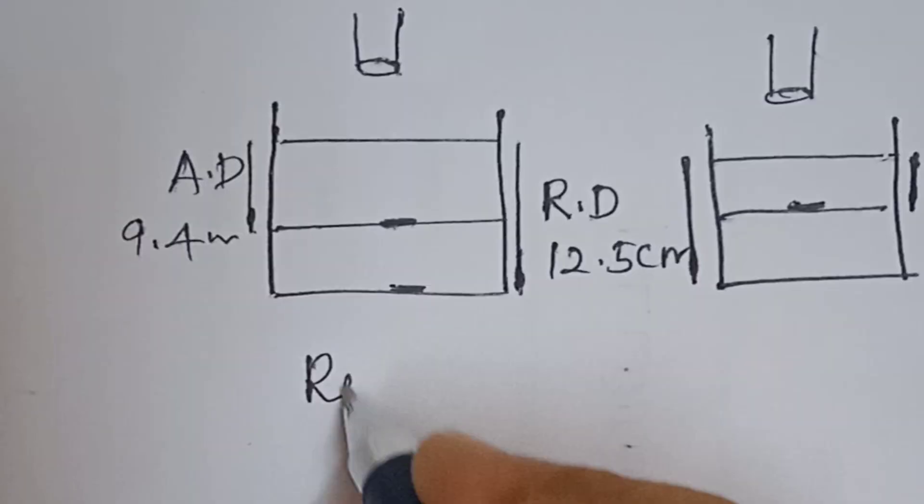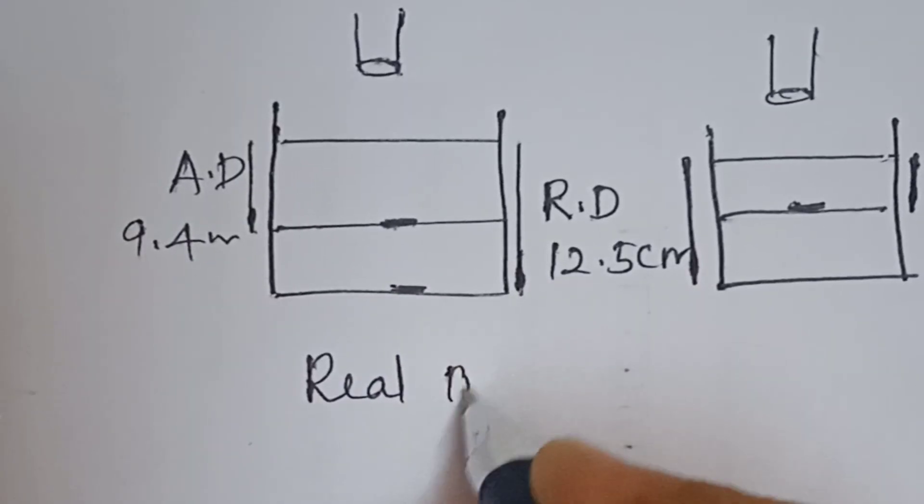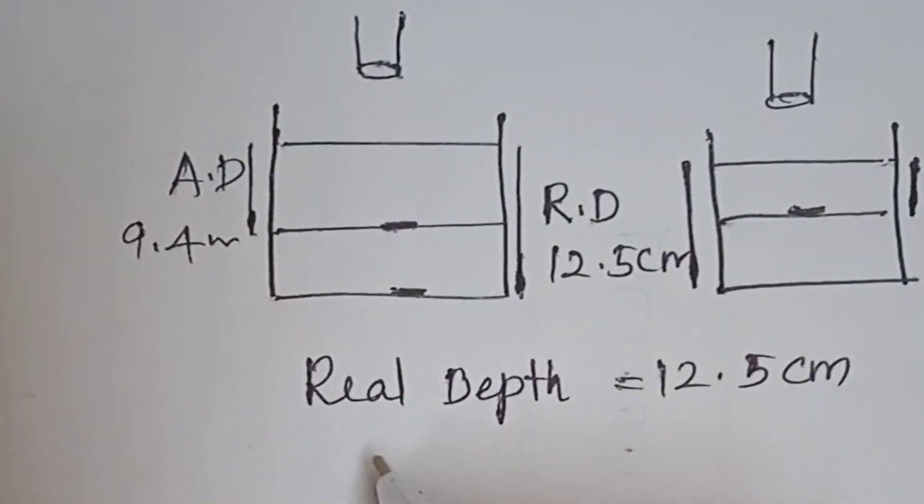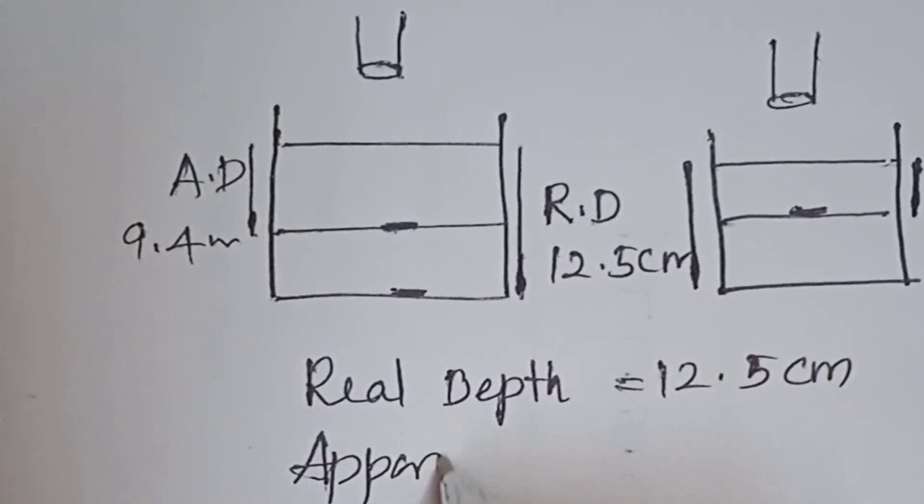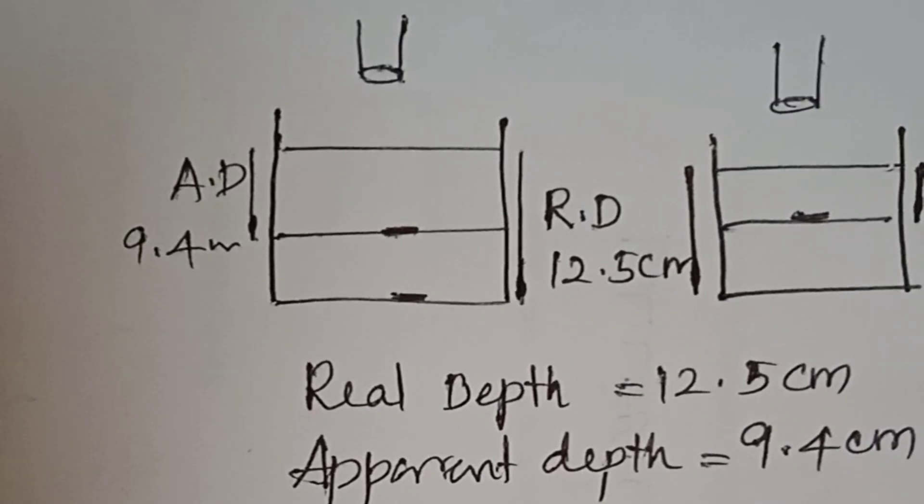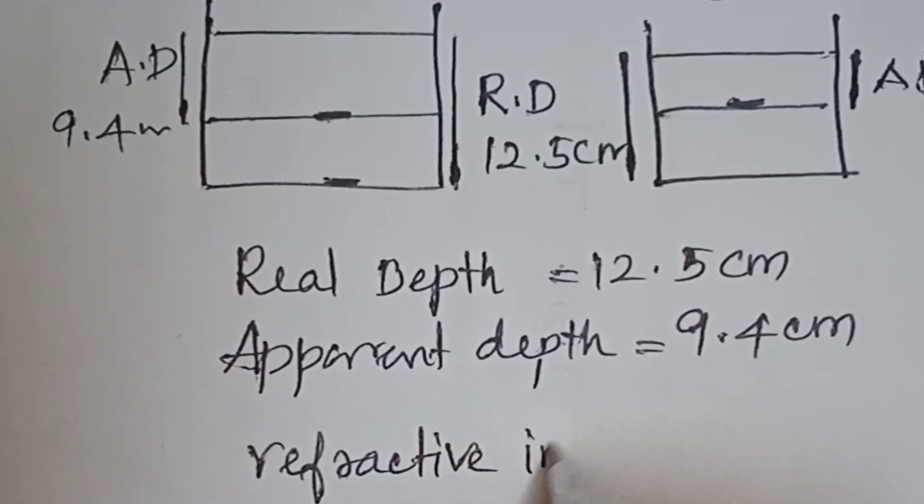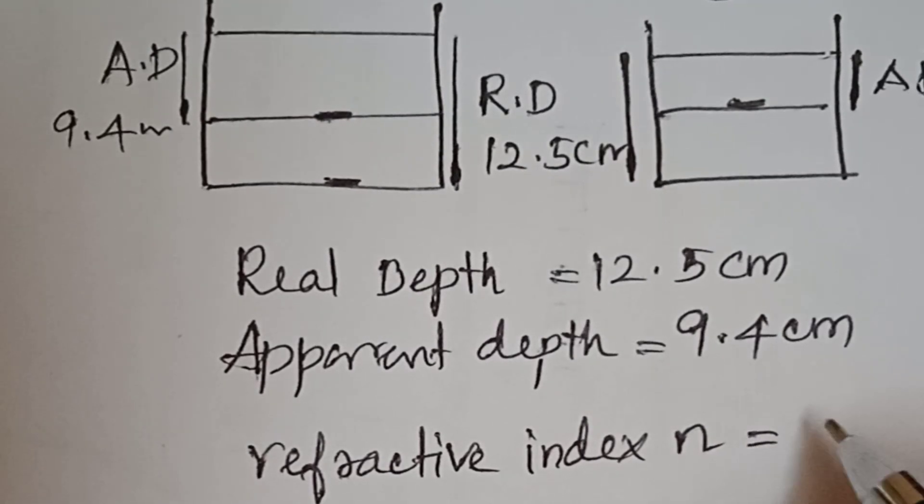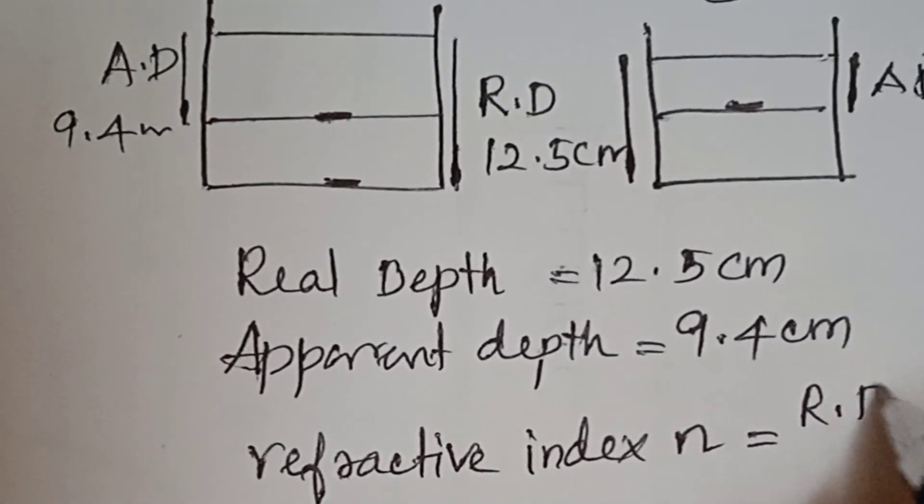The real depth equals 12.5 cm. The apparent depth is 9.4 cm. The refractive index n equals real depth divided by apparent depth. This is the formula.